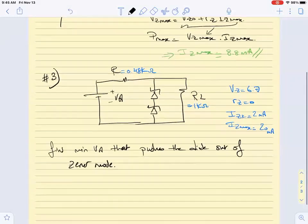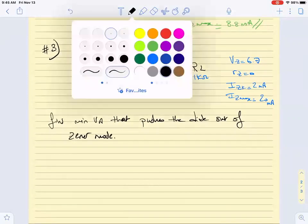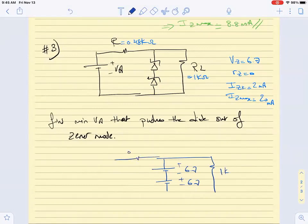The first thing that we know is that automatically we can replace the two diodes in the circuit with the voltage vz equal to 6.7, and this is 6.7 volts. I will have here a 1 kilo ohm and I will have here 0.48 k and I have here my voltage VA.